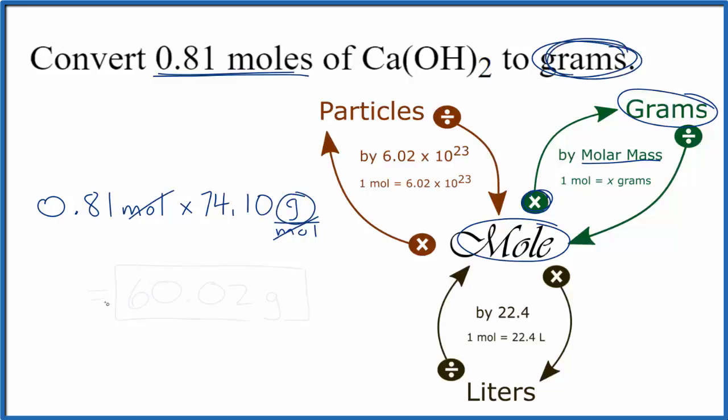So we do the multiplication. We get 60.02 grams of calcium hydroxide.